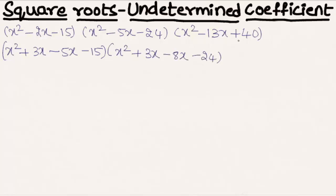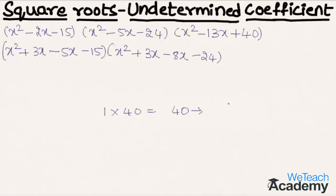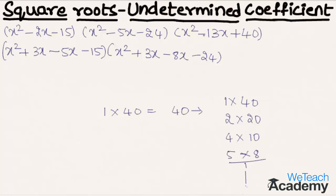Now let us factorize the last expression. Multiplying the coefficient of x² and the constant term gives 1 × 40 = 40. The factors of 40 include 1×40, 2×20, 4×10, 5×8. Adding -5 and -8 gives -13, which is the coefficient of x. So we write this expression as x² - 5x - 8x + 40.